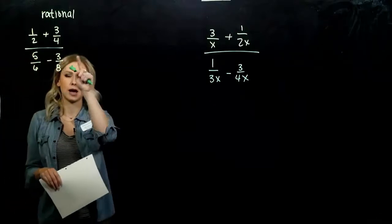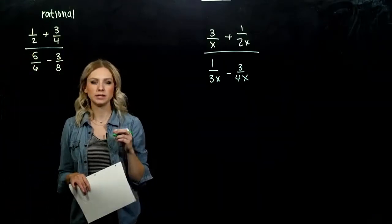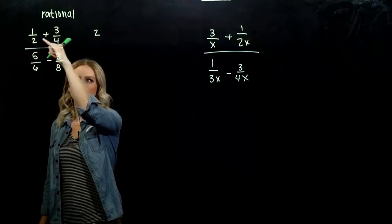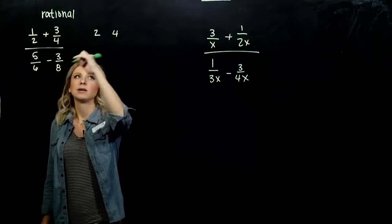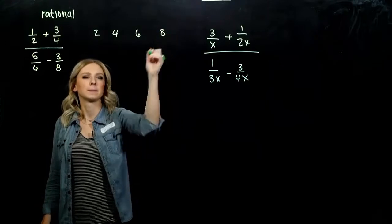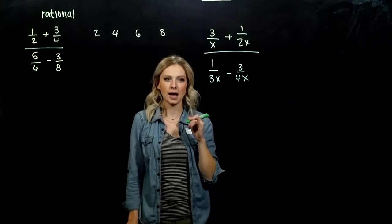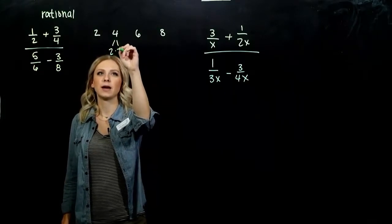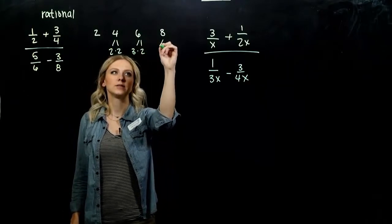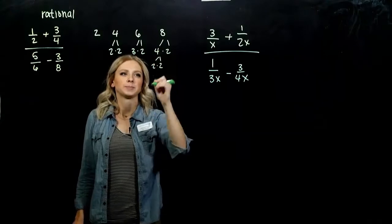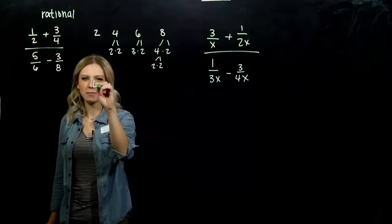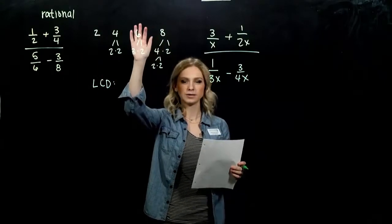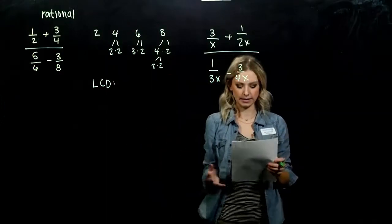We want to simplify this complex rational expression. We need to take each denominator and break it down into its factors. My denominators are 2, 4, 6, and 8, and we want the least common denominator between all four. It's helpful to break them down into their prime factorizations so we can see what we're working with. Our LCD needs to be divisible by 8, 6, 4, and 2.